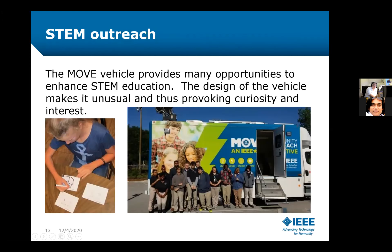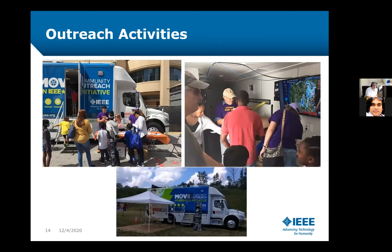We do STEM outreach with opportunities for kids to learn hands-on — for example, a girl using a special conductive-ink pen to draw electrical circuits on paper involving a battery, an LED, and a switch. We attend science festivals like the Atlanta Georgia Science Festival and the Boy Scout Jamboree, demonstrating our vehicle's technology and discussing how disaster relief works.